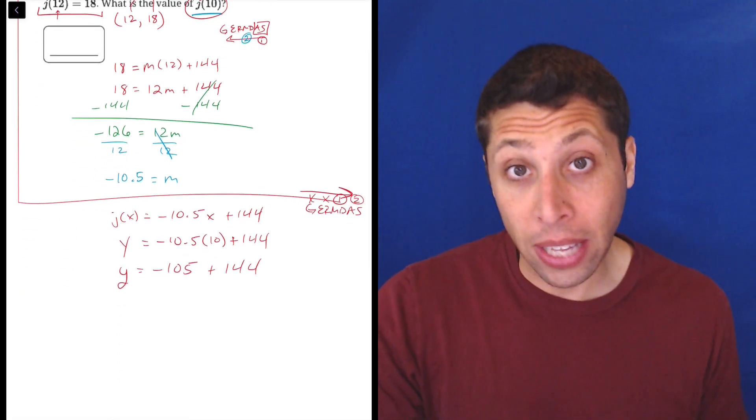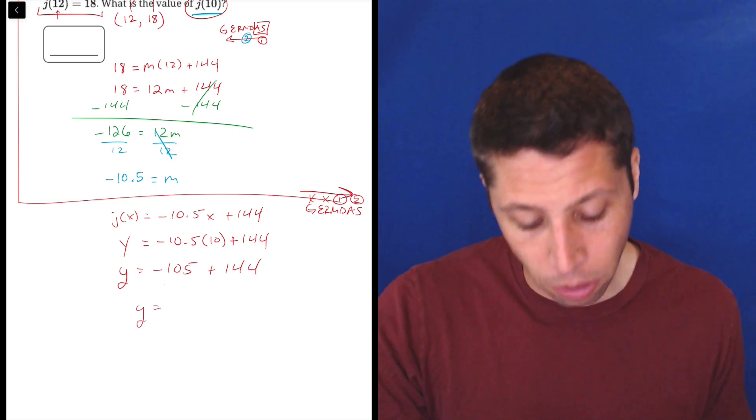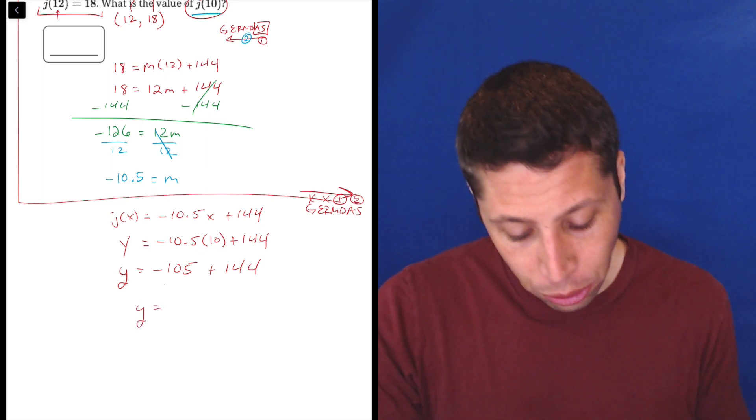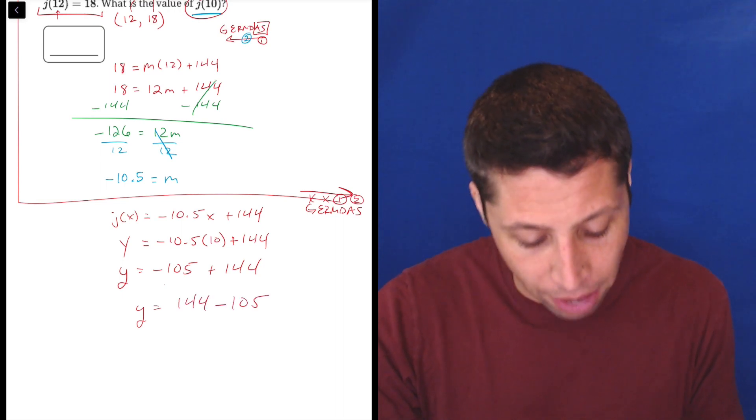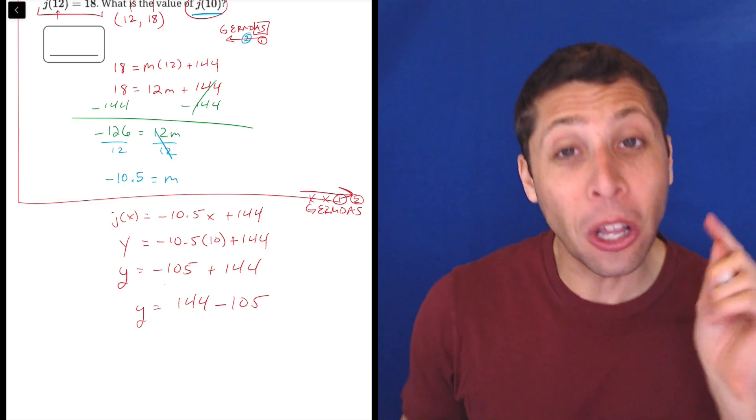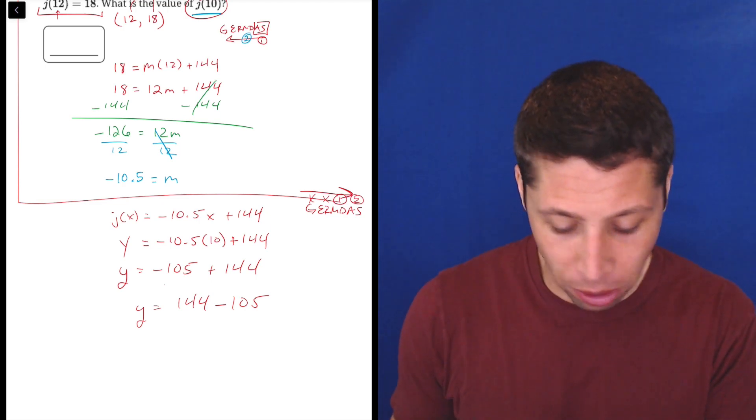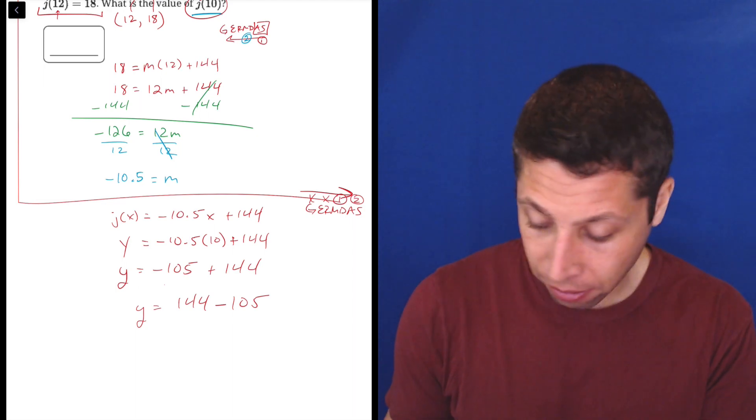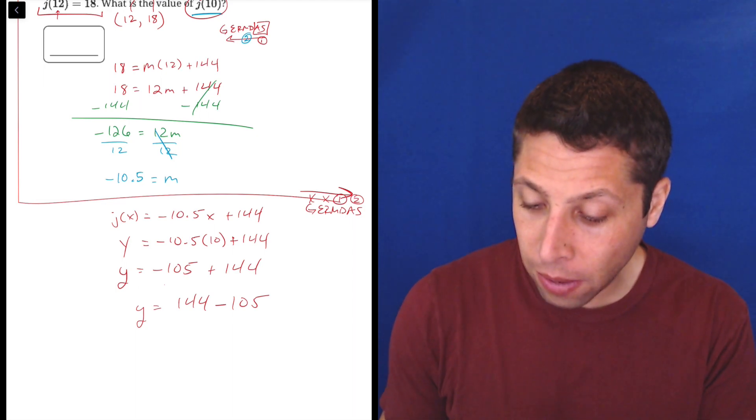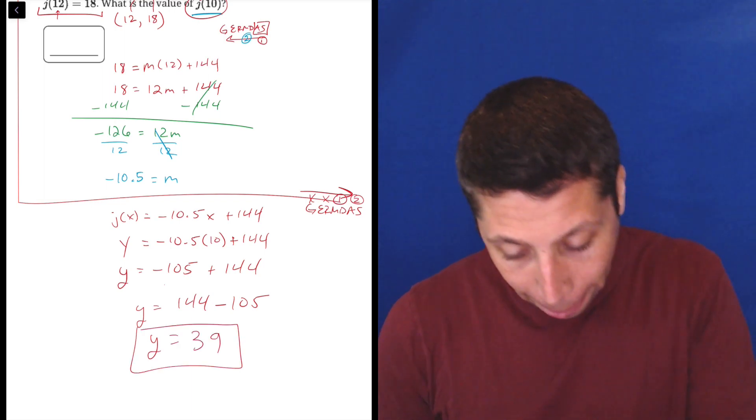And depending on how you want to think of this, you could think of it as addition, right? Negative 105 plus 144. Or if you wanted to, you could think of it as subtraction. 144 minus 105, right? Because we can kind of rotate numbers when we're doing addition and subtraction as long as we keep the sign with the number, right? So negative 105 becomes a minus 105. So 144 minus 105 is 39. That's our answer. That's it.